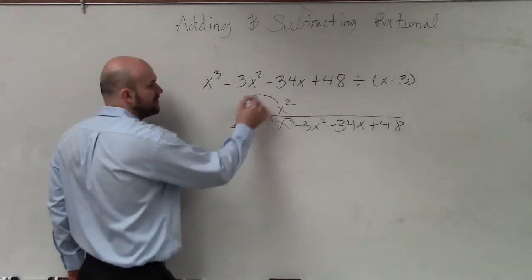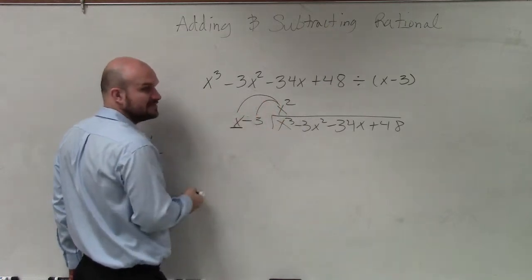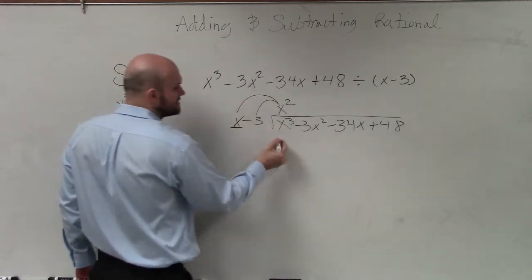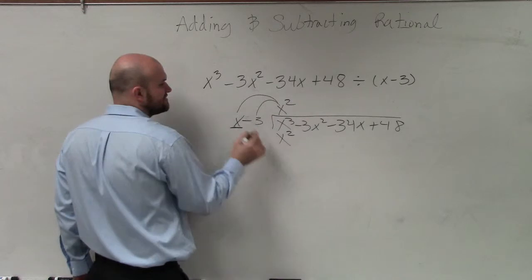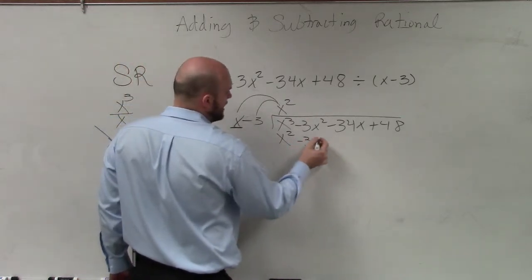Then what we do is we multiply the x times x and the x times negative 3. x times x is x squared. x times negative 3x is negative 3x squared.